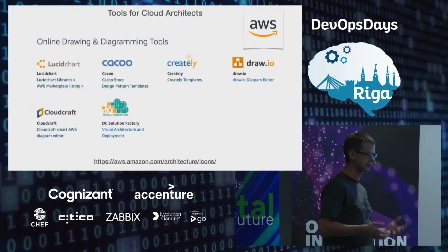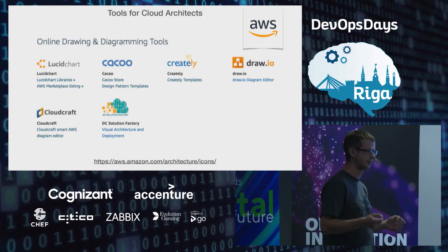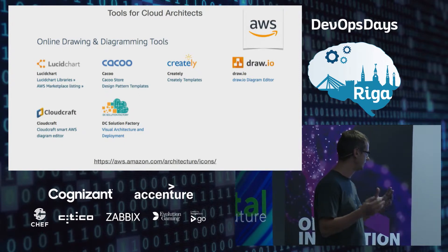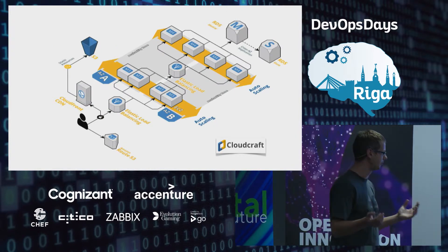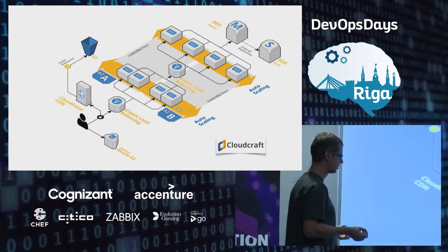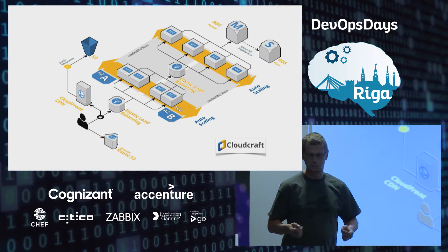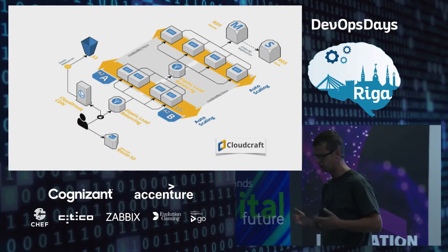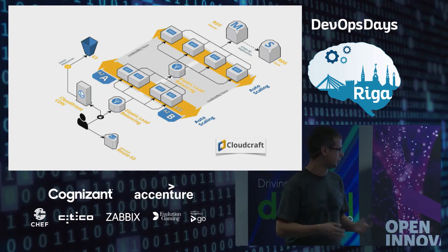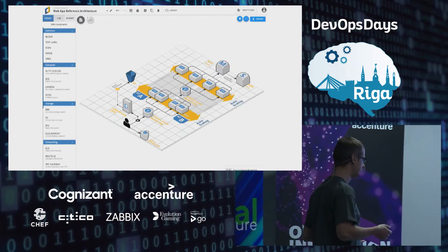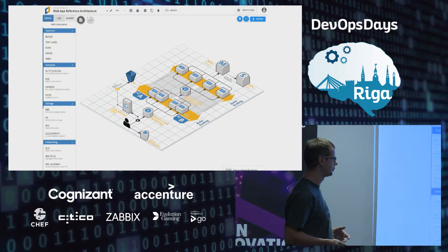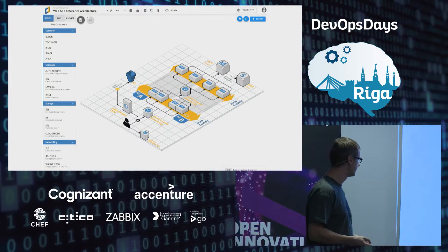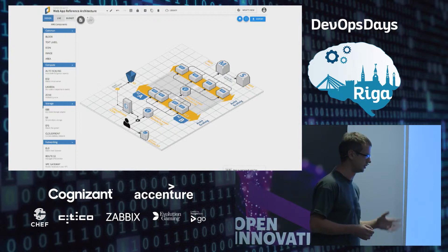Cloud architects understand cloud environments, and they usually use tools like countless different graphing tools. They put their expertise to come up with something nice and visual that can help developers actually get the product out the door. Some people, I hope the majority, are using things like CloudCraft, where you can draw things and visualize all your components right from the browser — free or freemium — and specify different properties like which region, what type of instance, and so on.